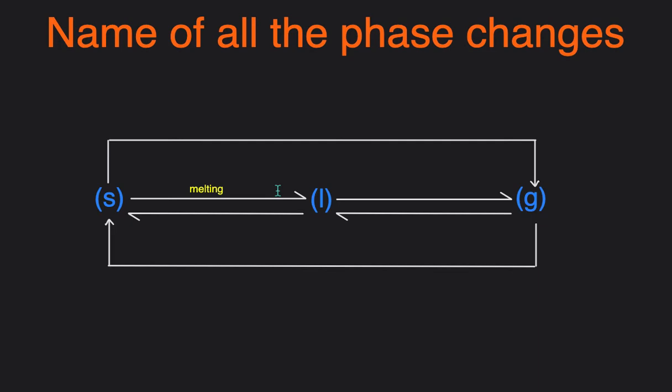The next, liquid to gas, there's a lot of names for this. Some of the names include vaporization, boiling, and evaporation. This is what happens when you put water on the stove and then turn on the heat. It turns from liquid water into gaseous water.